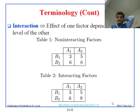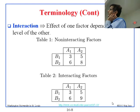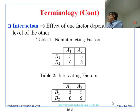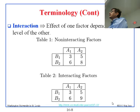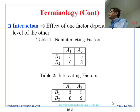One more term: interaction. Here is an example with two factors — A (levels A1 and A2) and B (levels B1 and B2) — we run four experiments. With A1B1 we get 5, A1B2 gives 6, A2B1 gives 8, A2B2 gives something. You can clearly see that whenever you go from A1 to A2, you increase performance by two, regardless of what B is. Whenever you go from B1 to B2, you increase performance by three. That is straightforward.